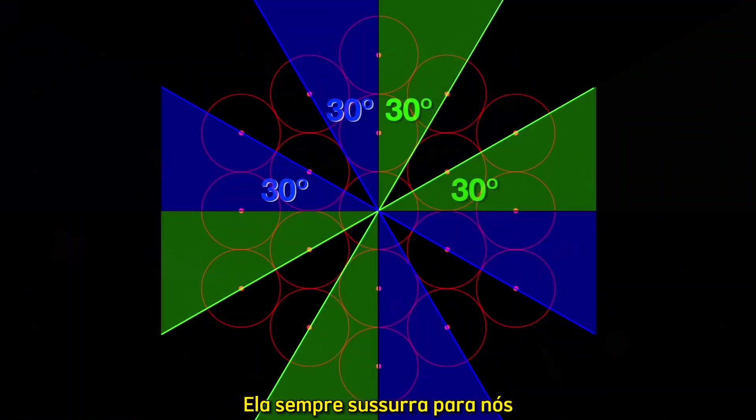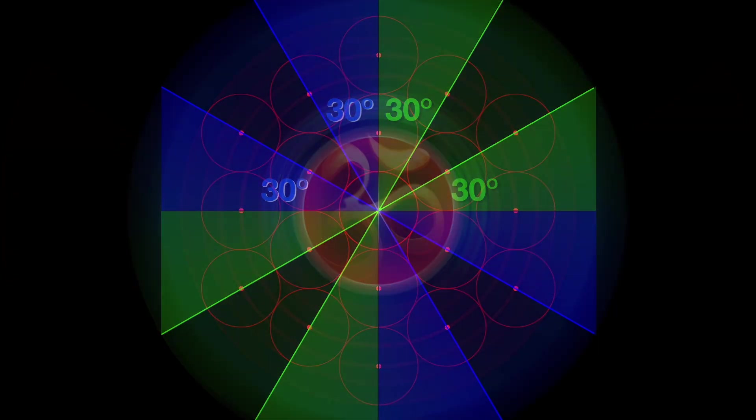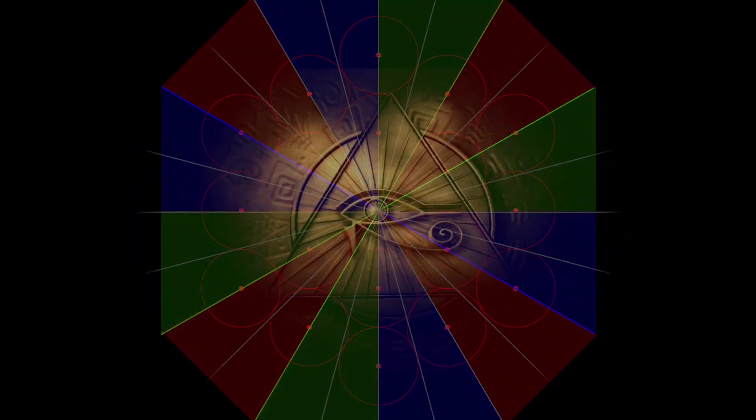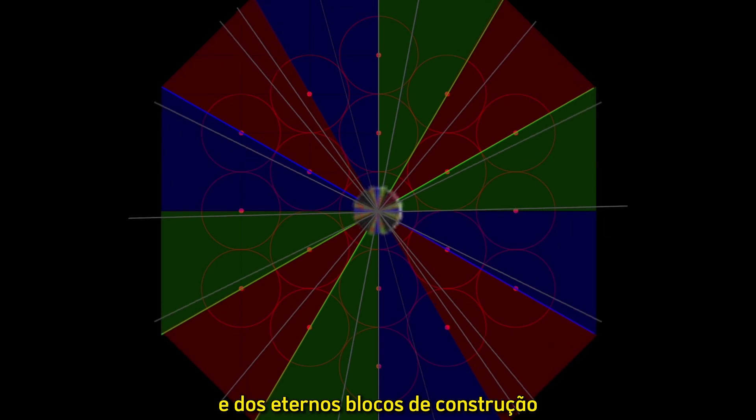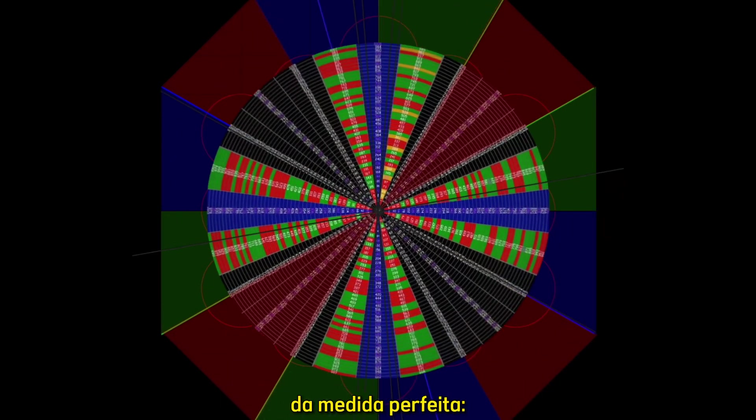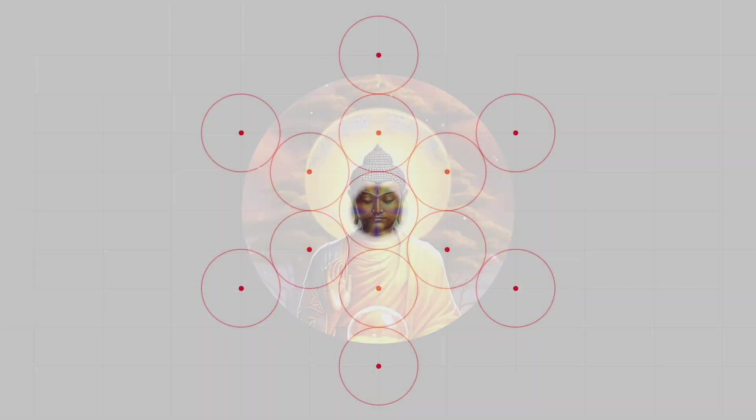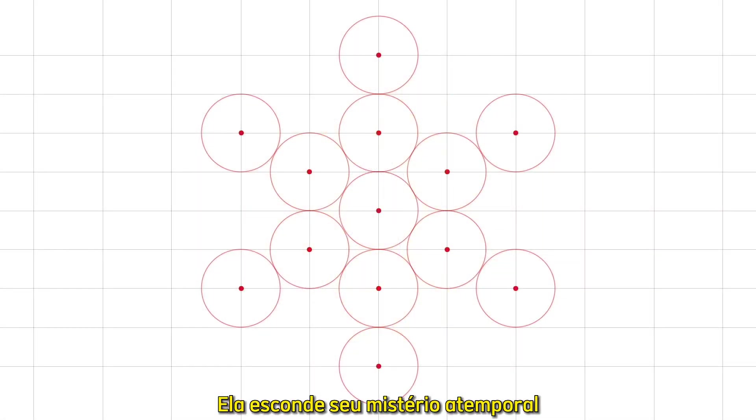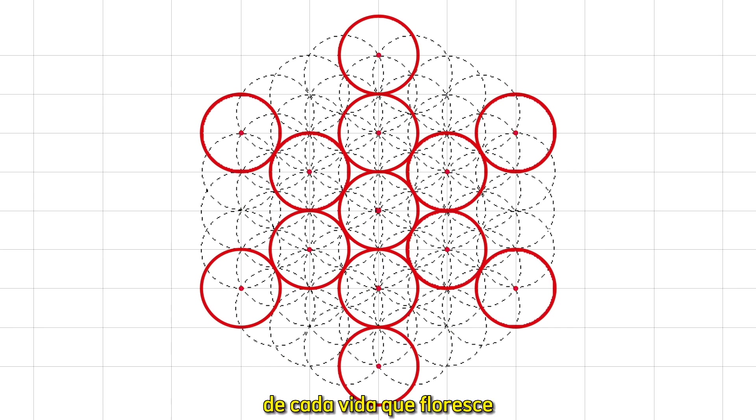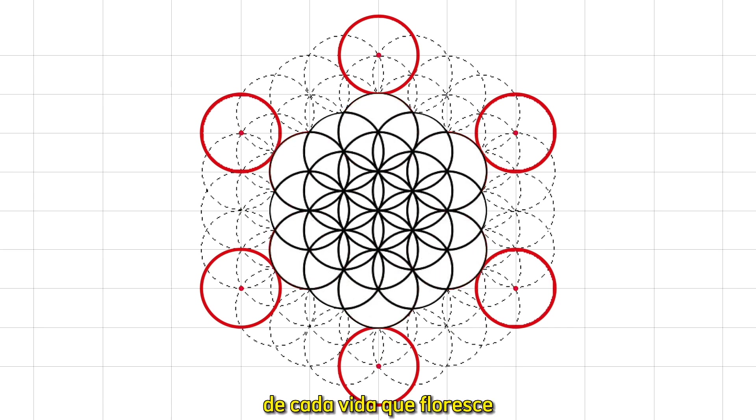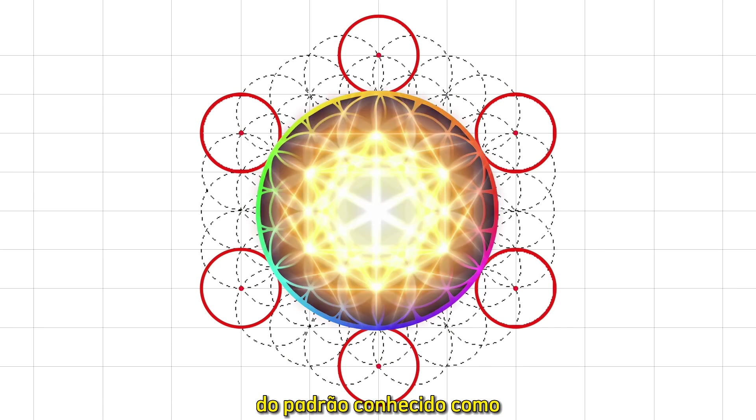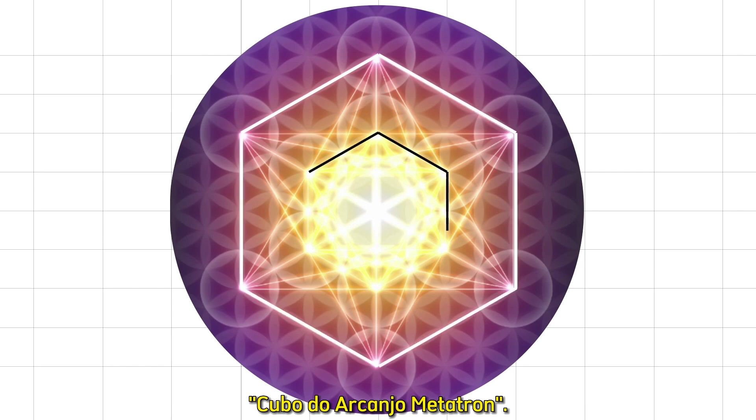It ever whispers to us through symbols and the eternal building blocks of perfect measure - prime numbers. It hides its timeless mystery within every flower of life that blossoms from the blueprint known as Archangel Metatron's Cube.